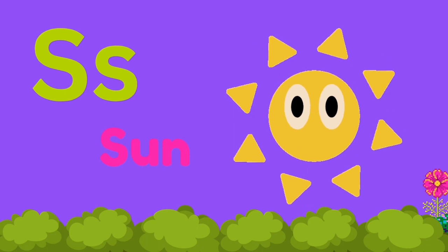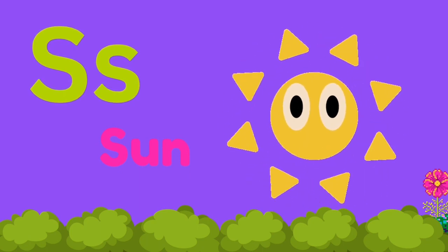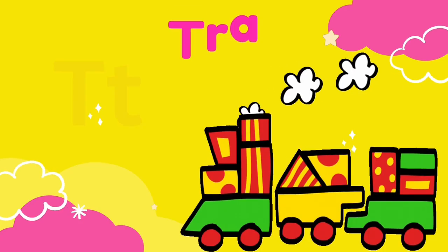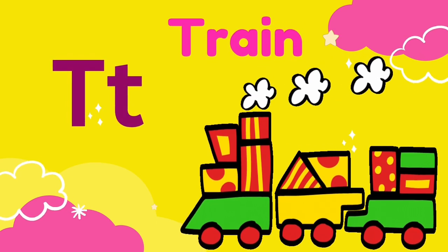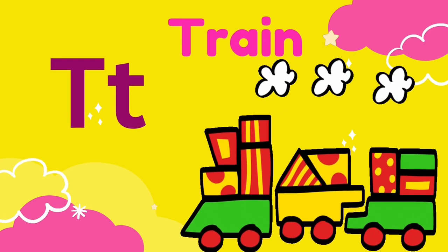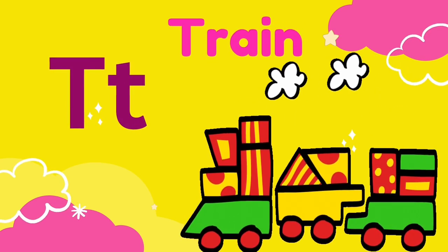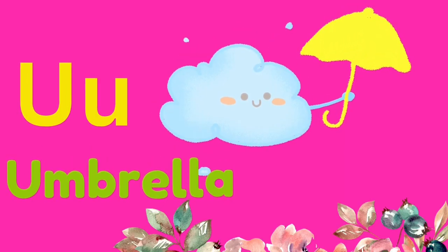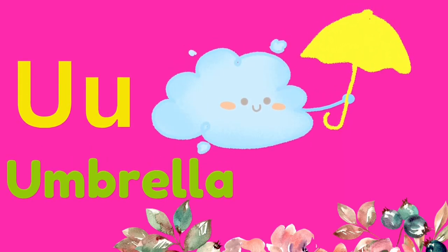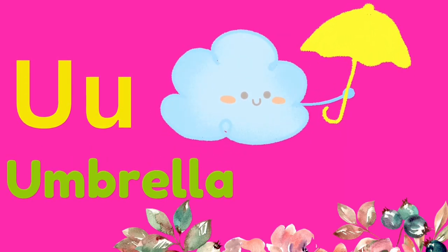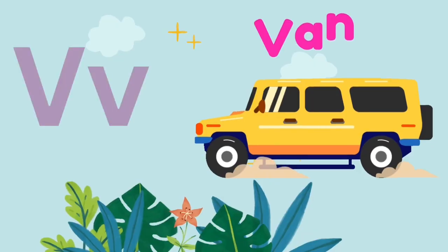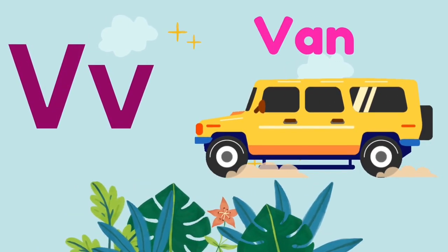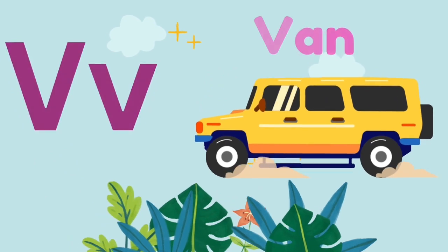S is for Sun, Sun. T is for Train, Train. U is for Umbrella, Umbrella. V is for Van, Van.